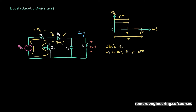Writing the voltage loop equation around the equivalent circuit, we get: minus Vin plus VL1 equals zero. Therefore, VL1 equals Vin during State 1.